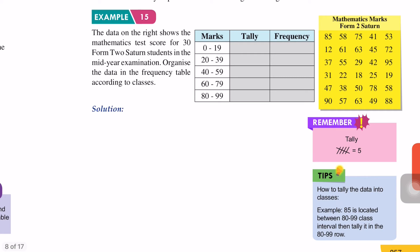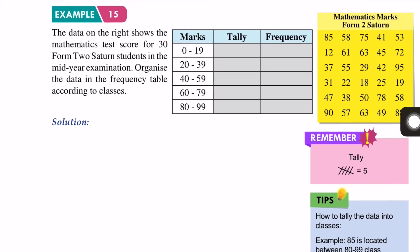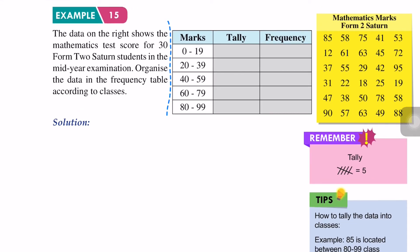Let's look at Example 15. The data on the right shows the mathematics test scores for 30 Form 2 Saturn students in the mid-year examination. Organize the data in the frequency table according to classes. We have raw data and classes are given: Marks. We need to count from 0 to 19, 20 to 39, and so on.